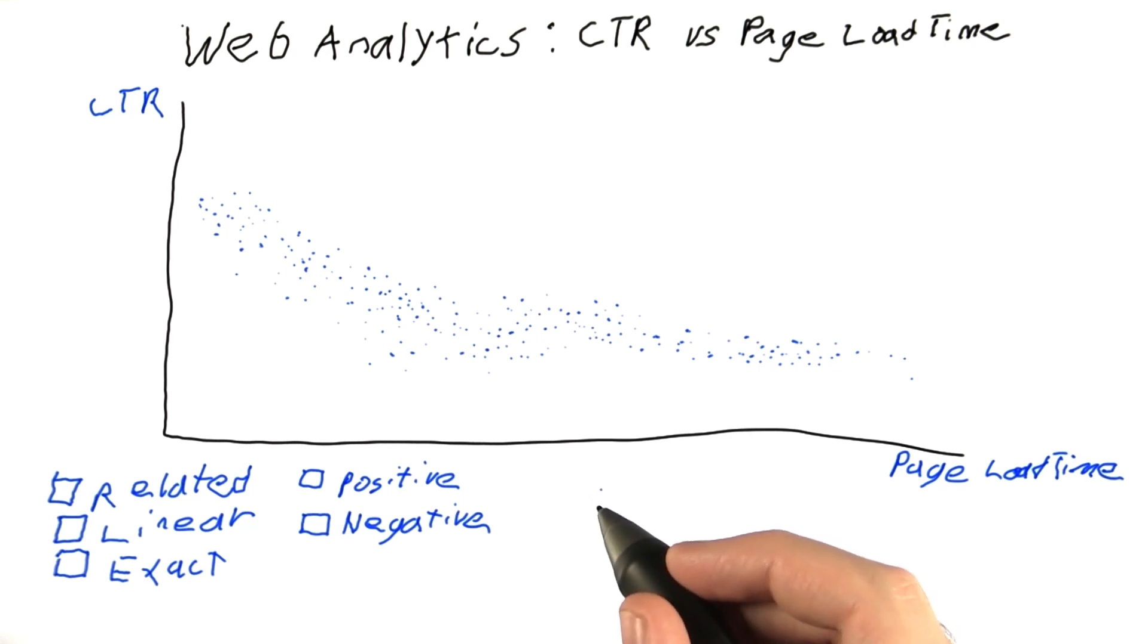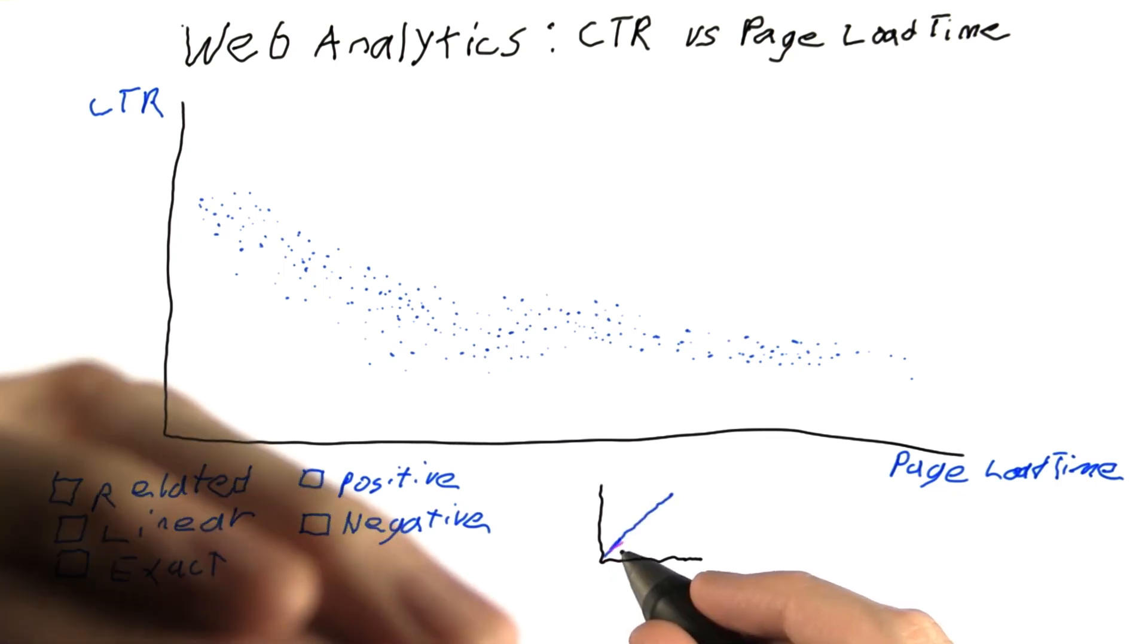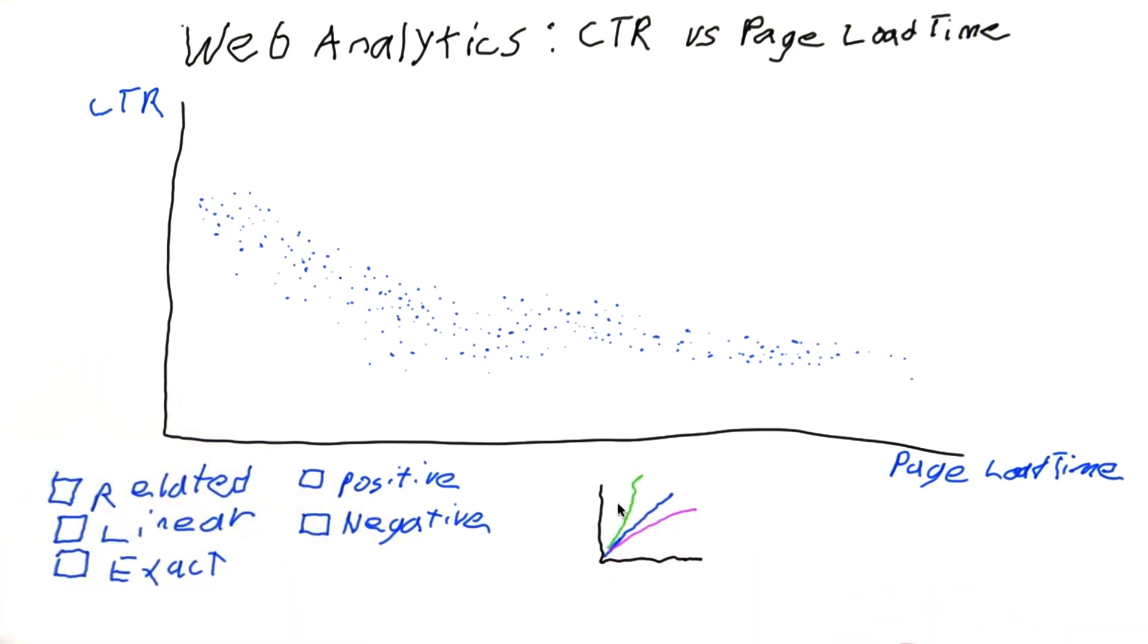A perfectly positive linear relationship would look something like this. But this and this are also positive relationships.